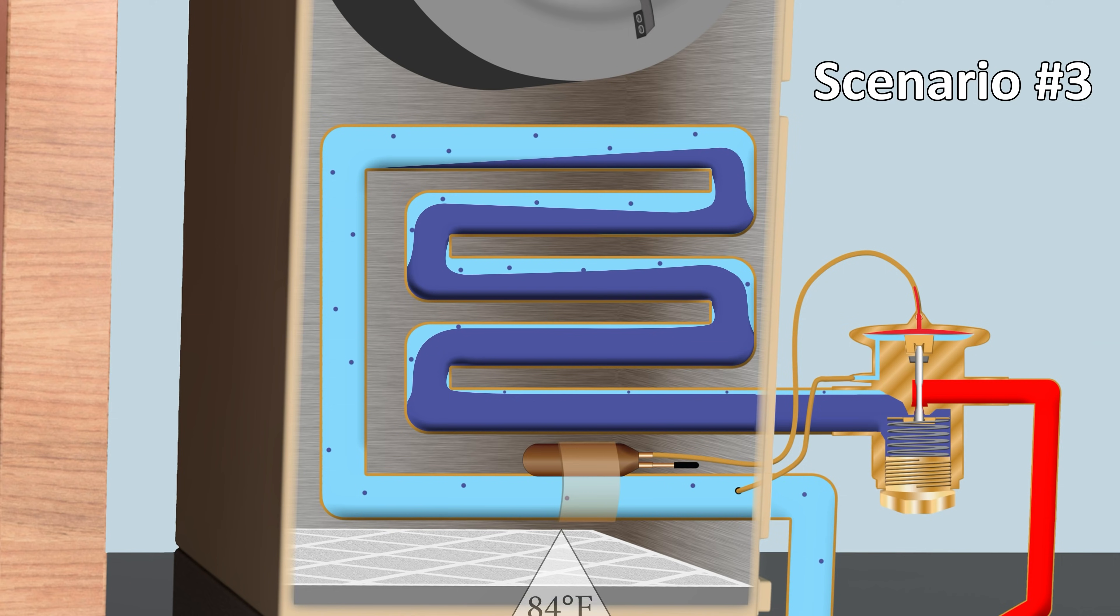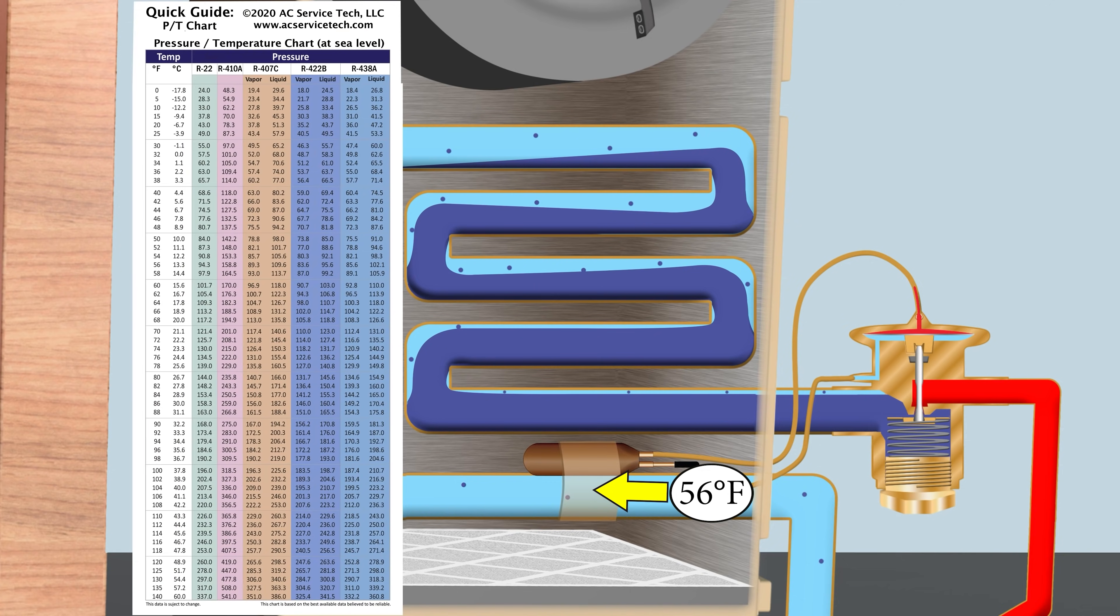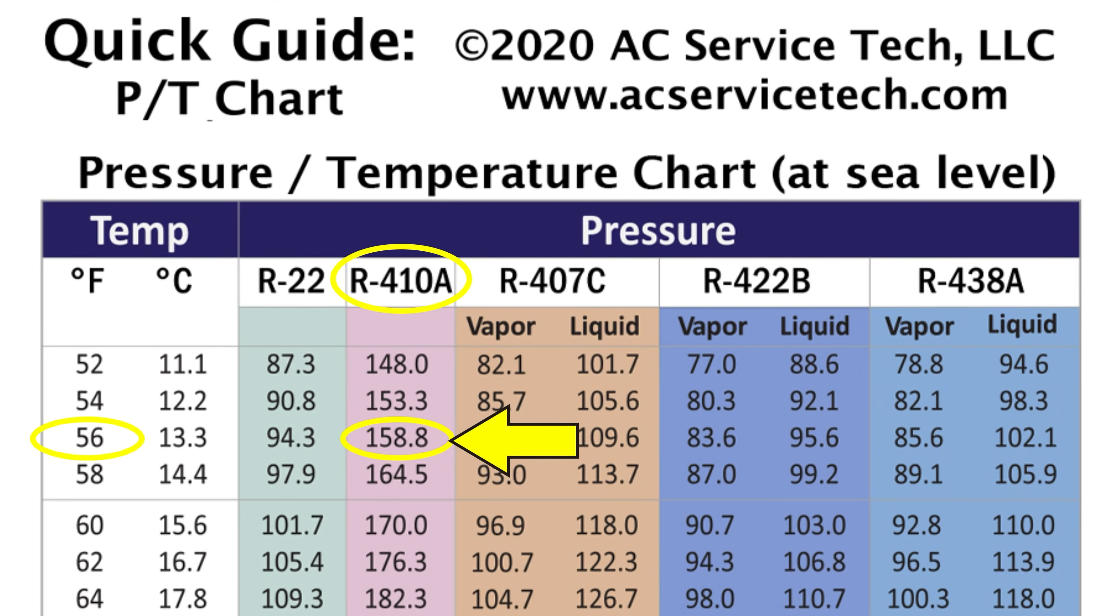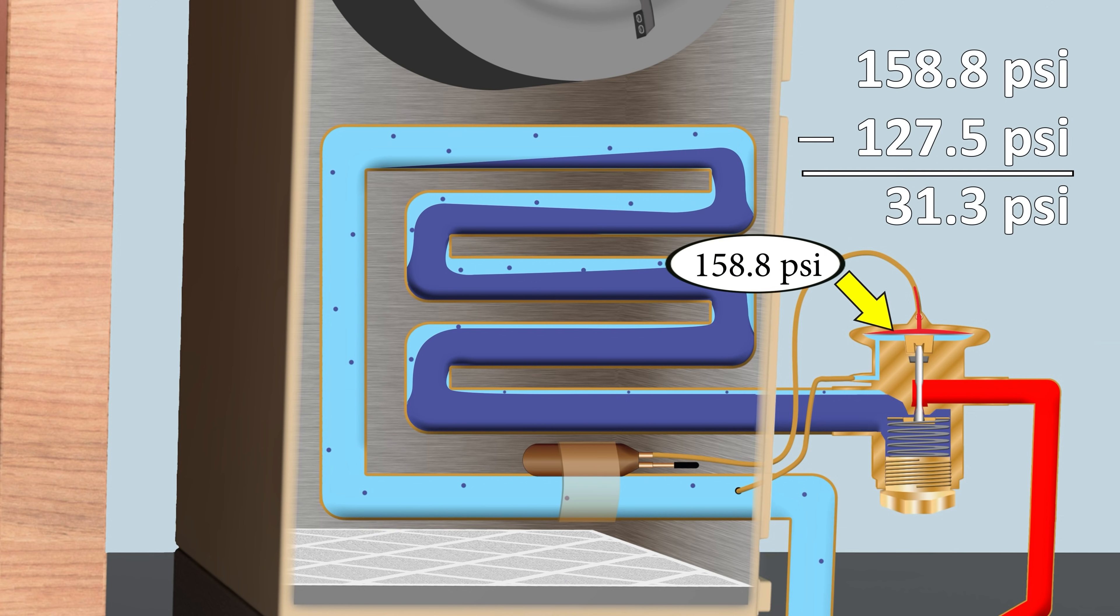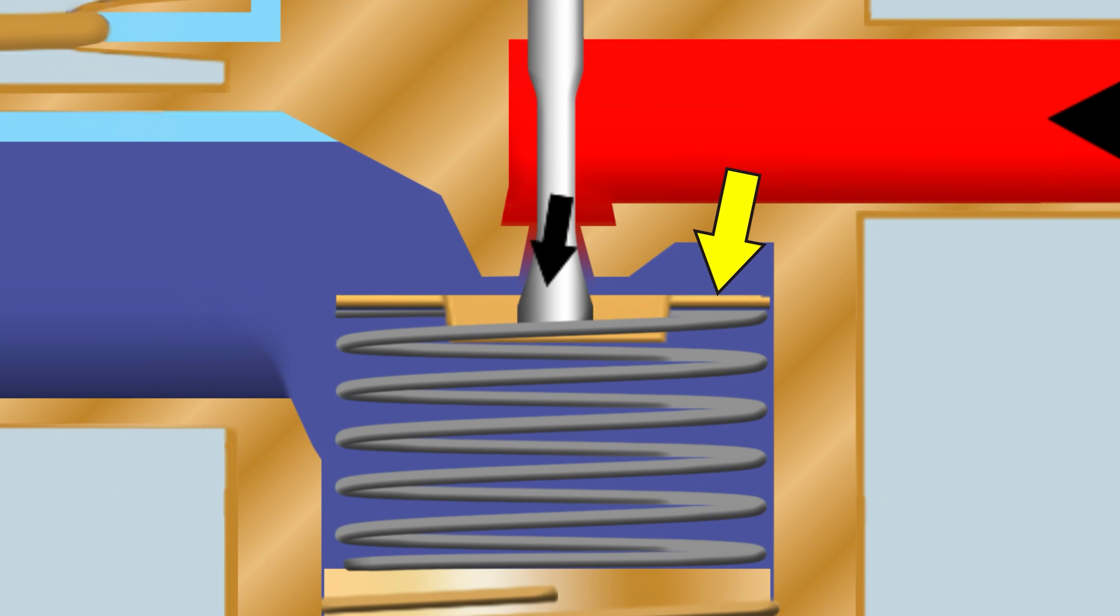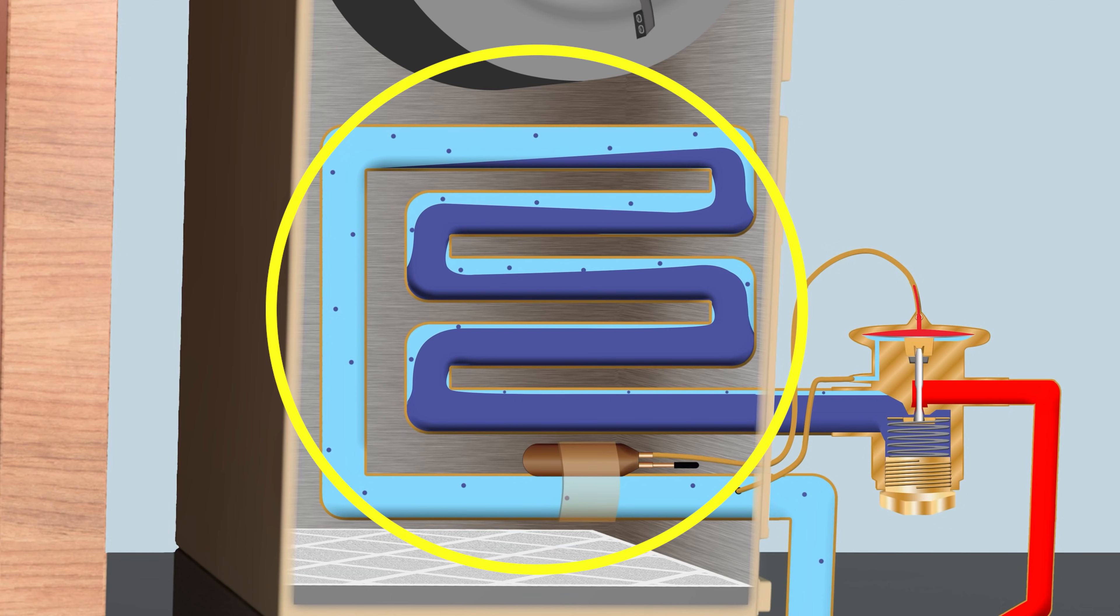For scenario three, we have the system being turned on for the first time, and it's say 84 degrees in the building, high humidity, so you have a high heat load. In this case, we have a vapor temperature on the bulb of 56 degrees. If we convert that to a saturated pressure for R410A, we have 158.8 psi, and we have a vapor pressure on the external equalization line of 127.5. So we take 158.8 minus 127.5, and we're left with a spring pressure of 31.3 psi. Now in this scenario, you can see that our spring is compressed even more. Our opening size is even larger, so we have to allow more refrigerant into this coil, and we still have a superheat of 12 degrees.